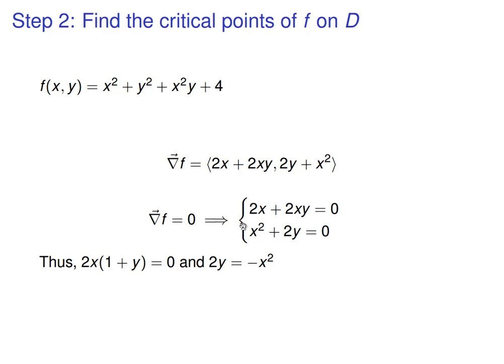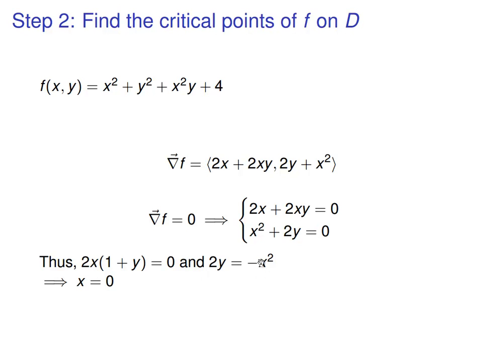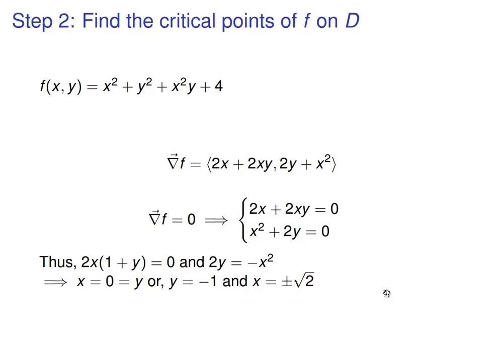Well, the first one tells you that, if we factor out a 2x, that 2x times 1 plus y is 0, and the second one will tell us that 2y is negative x squared. Well let's look at this first one. It could be 0 if x is 0. If x is 0, well then this equation tells you that y is 0. It could also be that y is negative 1 over here, that would give you a 0. And if y is negative 1, then 2y is negative 2, and so x squared would be 2, so x would be plus or minus the square root of 2. So we're going to get three critical points. It could either be 0, 0, coming from this case, or if y is negative 1, x has two choices, either positive root 2 or negative root 2. So those are our three critical points.